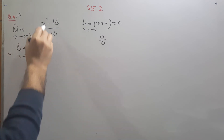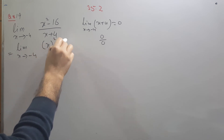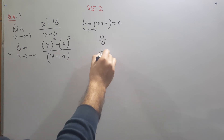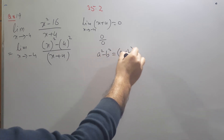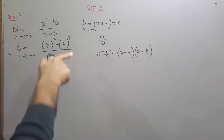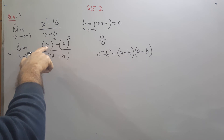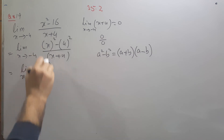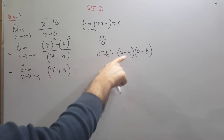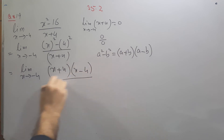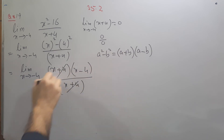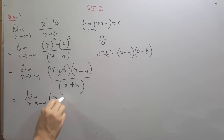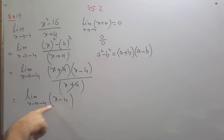We can simplify: the numerator is x squared minus 4 squared, which uses the formula a squared minus b squared equals (a plus b)(a minus b). Here a equals x and b equals 4, so we write (x plus 4)(x minus 4) in the numerator. The (x plus 4) in the numerator cancels with (x plus 4) in the denominator, leaving us with the limit as x approaches minus 4 of just (x minus 4).